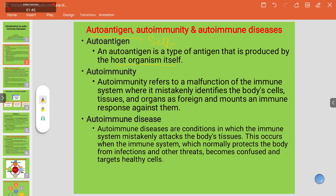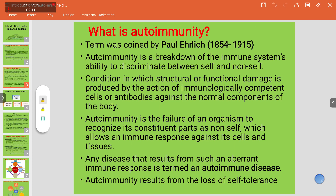The diseases arising from this are known as autoimmune diseases. Autoimmune diseases are conditions in which the immune system mistakenly attacks the body's tissues. This occurs when the immune system, which normally protects the body from infections, becomes confused and targets healthy cells. The term autoimmunity was coined for the first time by Paul Ehrlich.